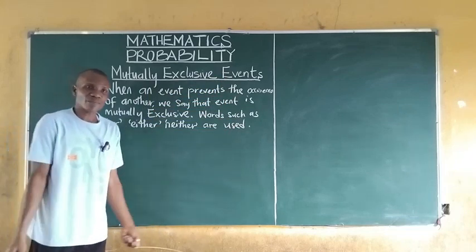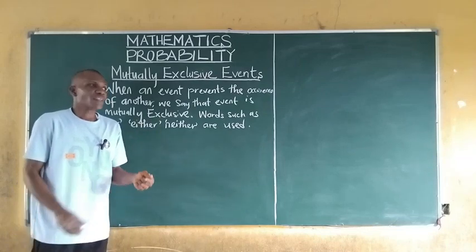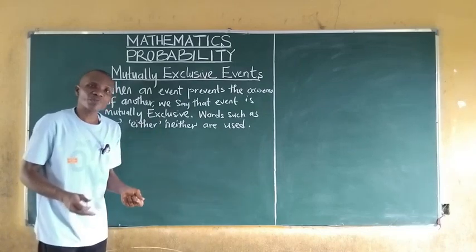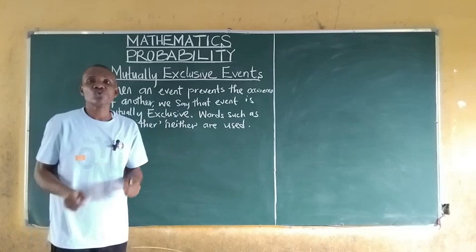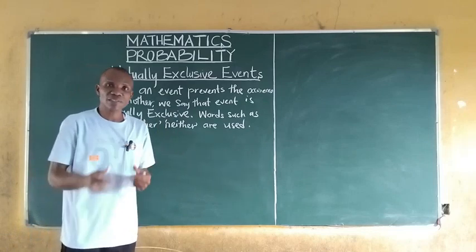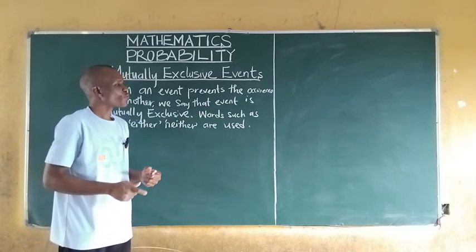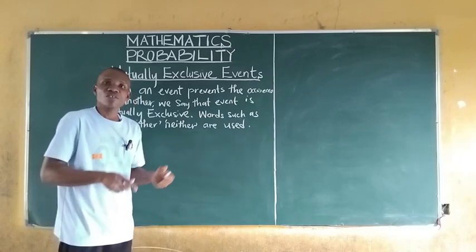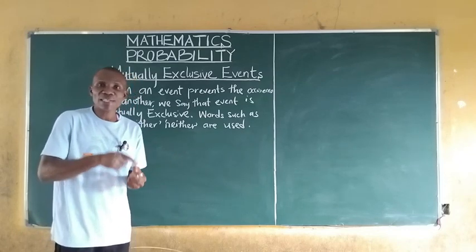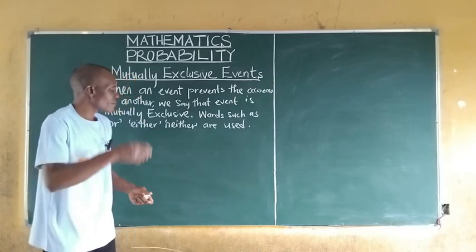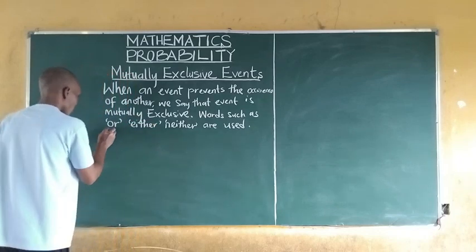For example, if we throw a dice, it is not possible for 3 and 2 to show up at the same time. So when such occurs, we call that event a mutually exclusive event.